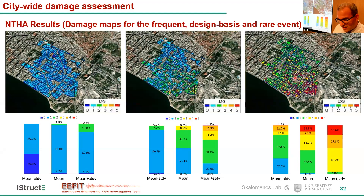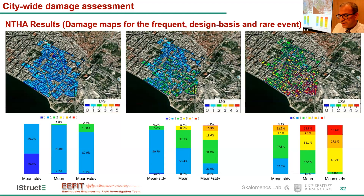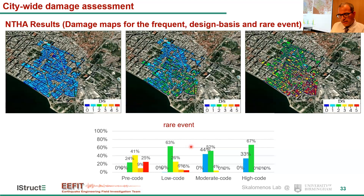It should be noted that the building's degree of damage is attributed as the maximum damage floor — the maximum inter-story drift of that floor — and the residual strength at the collapse point is assumed to be 0.8 of peak strength. Both approaches are quite conservative. Looking at the distribution of damage by building category, pre-code and low-code buildings experience the most severe damages, and 25% of buildings in the pre-code category may collapse.